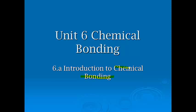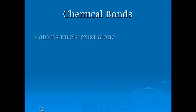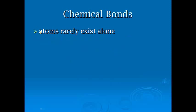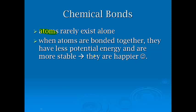So this whole Unit 6, we're going to talk about chemical bonding, and this is going to serve as our introduction to chemical bonding. Chemical bonds exist because atoms rarely exist alone. When atoms are bonded together, they have less potential energy and are more stable. Therefore, the atoms are happier. The lower the energy, the more stable they are and the happier they are.